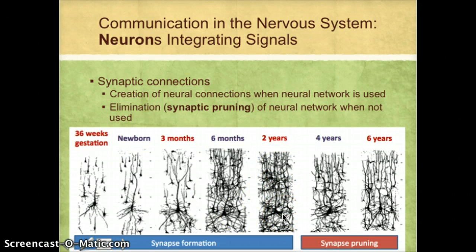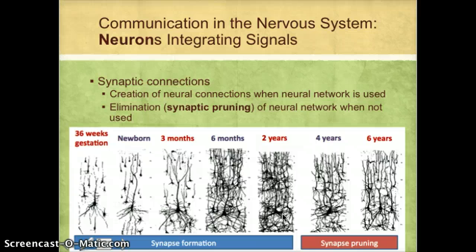By two years, the neural network or connections are really, really dense. After that, the brain and the neurons go through a period called synaptic pruning, in which some of the neural connections are eliminated. The ones that get eliminated are the ones that aren't used. In the brain, it really is use it or lose it — if you don't activate that neural pathway from time to time, it kind of shrivels up, gets pruned, and atrophies.